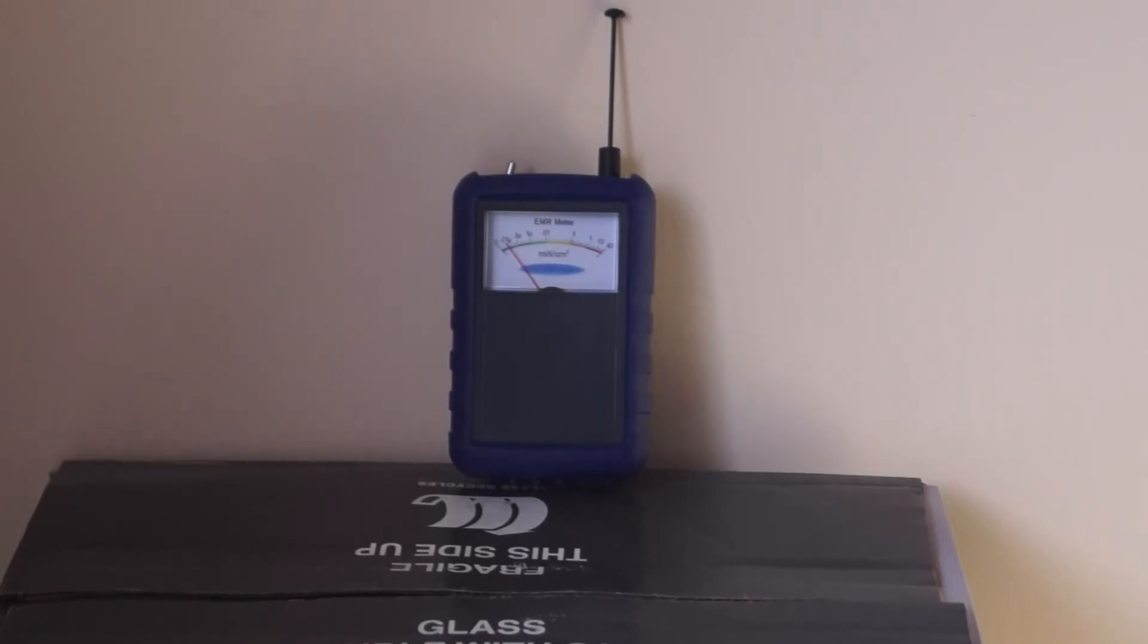And every 30 seconds it jumps up to almost 1 microwatt per square centimeter when the smart meter sends a ping to the base station. As we're just waiting now for the ping to come. There's the ping now. It's 0.01 to 0.02 microwatt per square centimeter and about every 30 seconds.